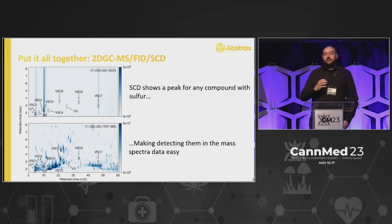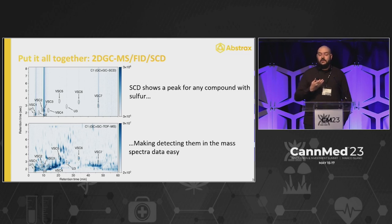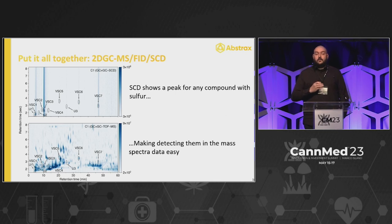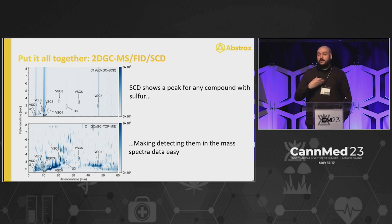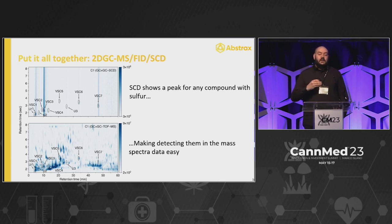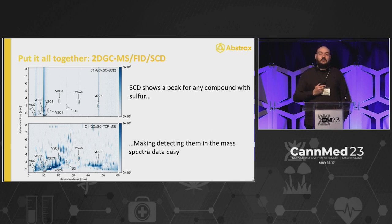To demonstrate why using a sulfur chemiluminescence detector was so important: the top plot shows the SCD output — you only see sulfur-bearing compounds, about 10 different compounds in that specific plot. The bottom plot shows hundreds of compounds. Since they're eluting at the exact same time on our system, we can overlay these plots and start pulling out the exact volatile sulfur compounds, solve their structures, and determine what makes these strains smell the way they do.